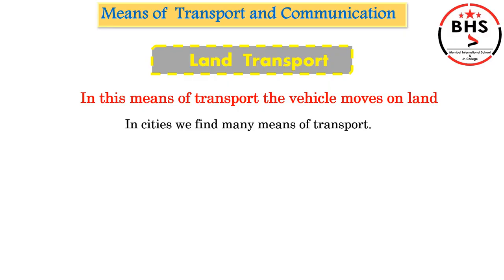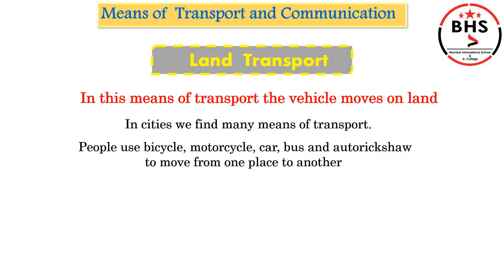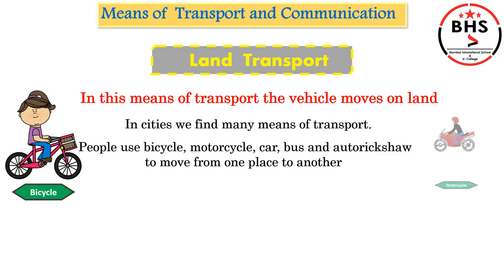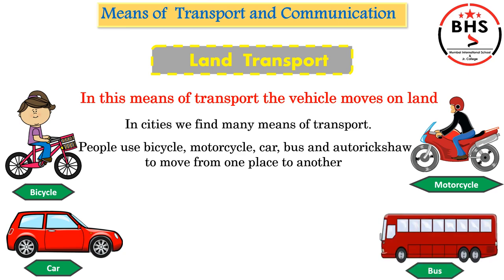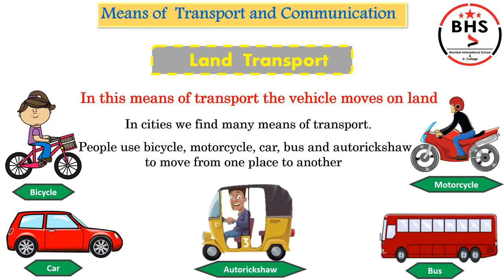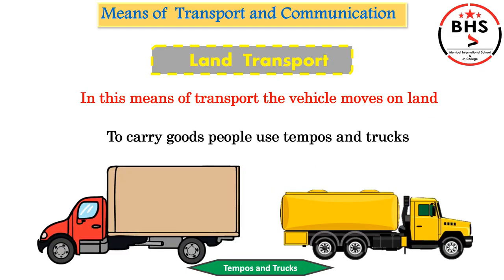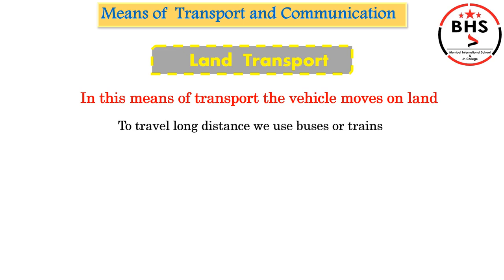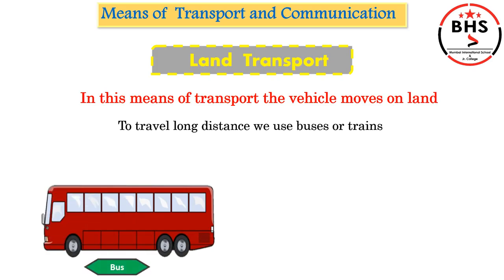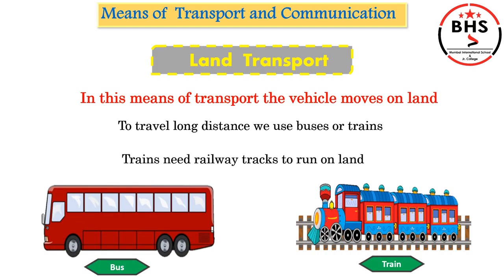In cities, we find many means of transport. People use land transport like bicycle, motorcycle, car, bus, and auto rickshaw to move from one place to another. To carry goods, people use tempos and trucks. To travel long distances to far away places, we use buses or trains. Trains need railway tracks to run on land.